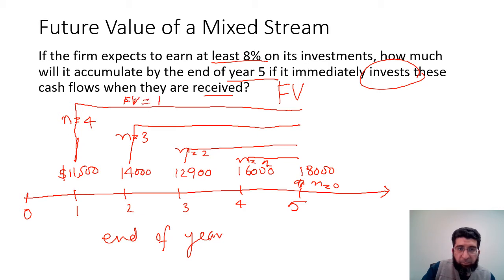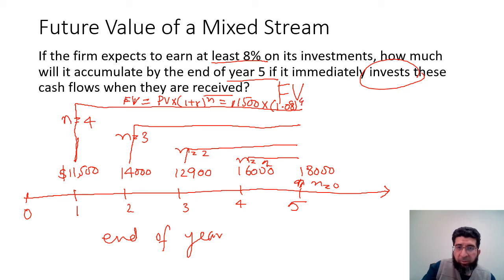The future value formula is: FV = PV × (1 + r)^n. For the first cash flow of $11,500 multiplied by 1.08 raised to the power of four, this gives us $15,645.62.